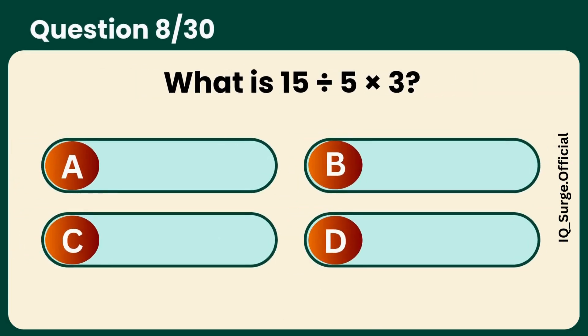What is 15 divided by 5 times 3? Answer D, 9.